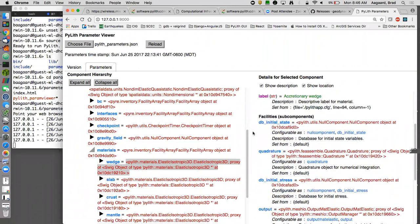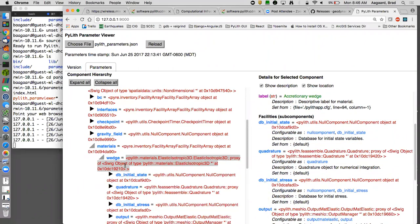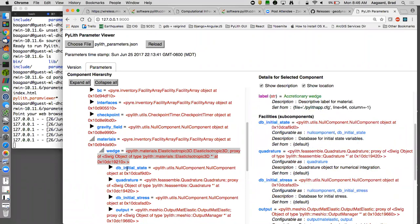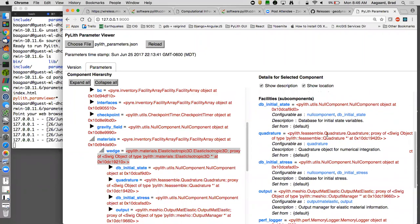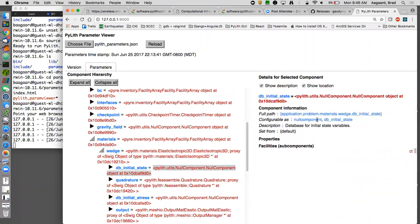It also gives you the properties, the type, the value that it's expecting, the current value, description, and where it was set that value from. Facilities and components—within my wedge, you'll see that I have a subcomponent db_initial_state. I can see what it's configurable as, and then I can click down here and see what its values are. You'll notice here that it has the full path.